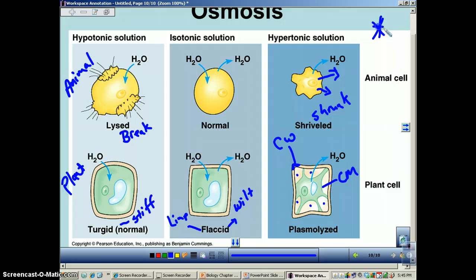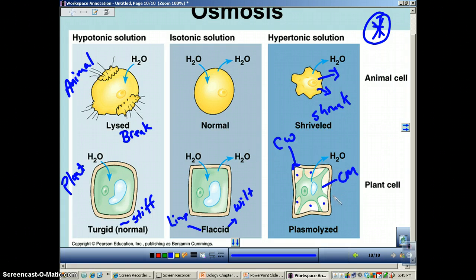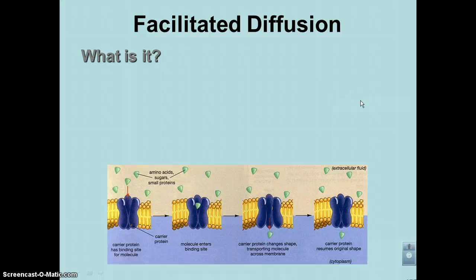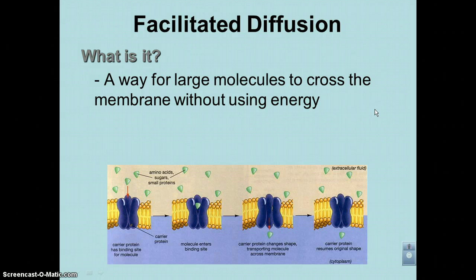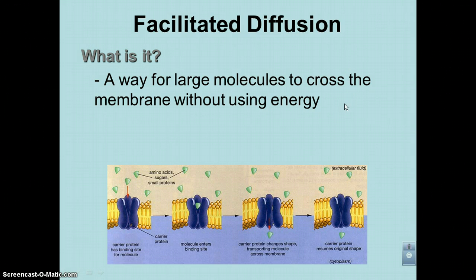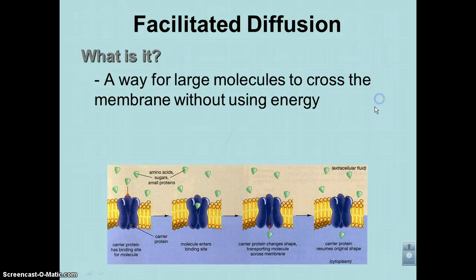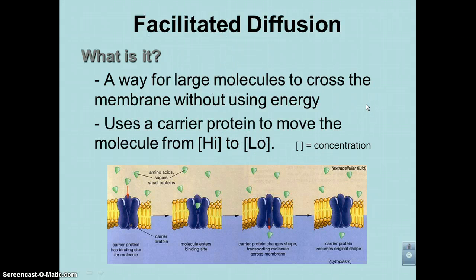This is a very important diagram to know. Make sure you understand all of it — ask your teacher if you need clarification. Facilitated diffusion — remember, facilitate means to help. It's a type of diffusion, passive transport. You're going from an area of high concentration to low concentration, but these molecules are too big to fit through the membrane. They can't squeeze in between the phospholipids.